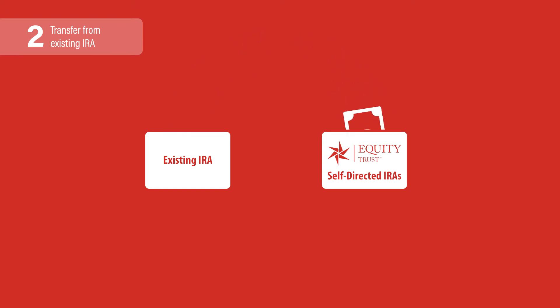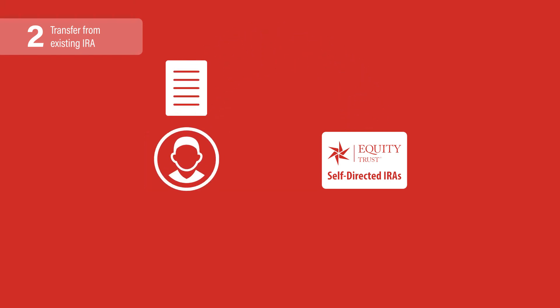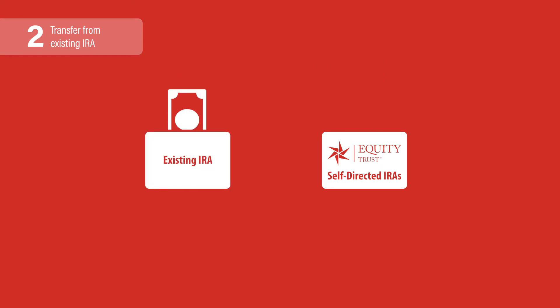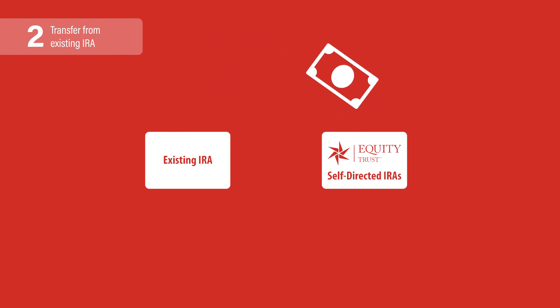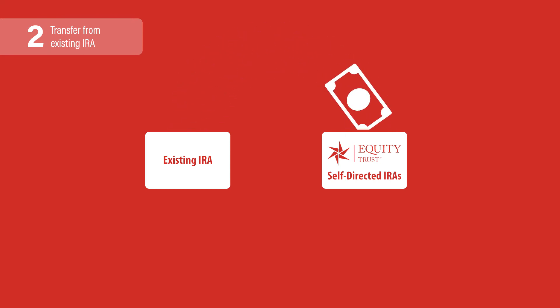It may also be possible to transfer existing stocks, bonds, or mutual funds your IRA holds, in addition to cash balances. Provide a completed application and transfer form to Equity Trust and we'll work with your current provider to complete the transfer request. In some instances, you may be required to initiate all or part of your transfer with your current custodian.